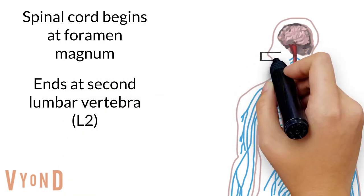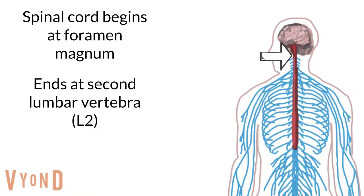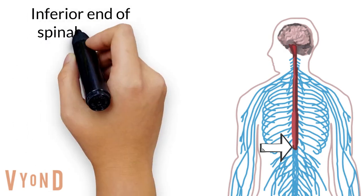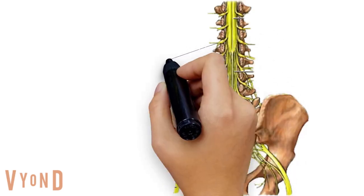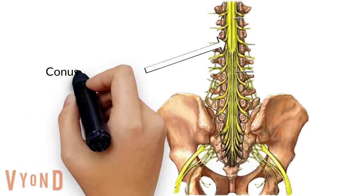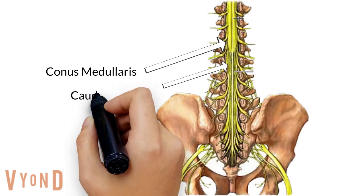The spinal cord begins at the foramen magnum and ends at the second lumbar vertebra, or L2. The spinal cord ends in a cone-shaped process called the conus medullaris.